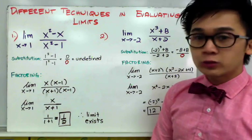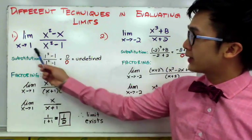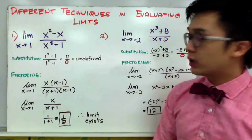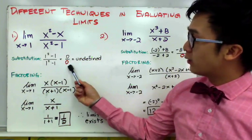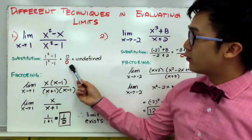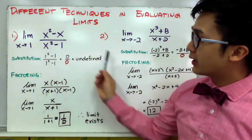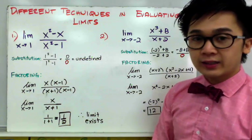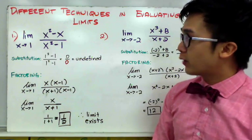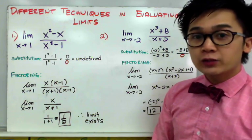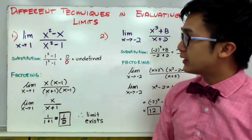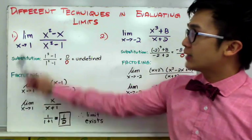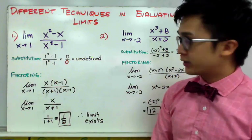By the substitution method, if we replace x with 1 we get 1 squared minus 1 over 1 squared minus 1, which gives us 0 in the denominator — the function is undefined. We can use other techniques such as factoring to verify whether the limit exists as x approaches 1.